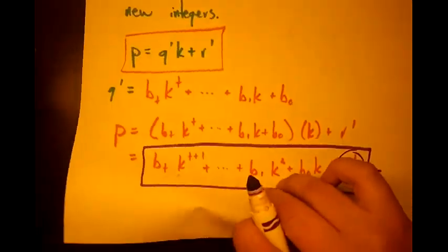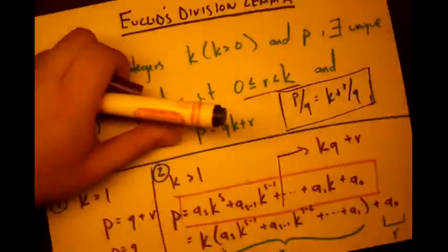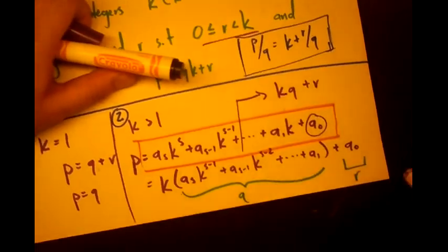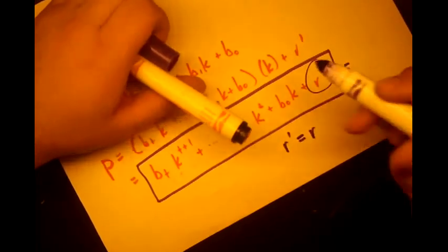this constant term here, r prime, and on the back our constant term is a naught, which we've called r, we see that r prime equals r. And now